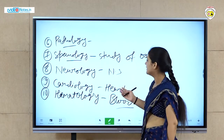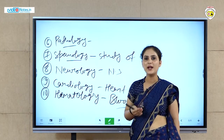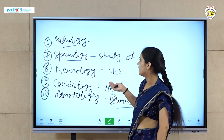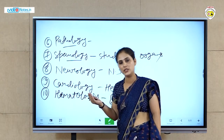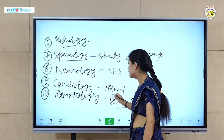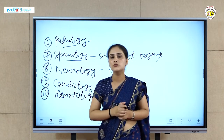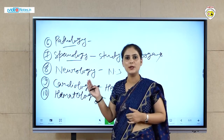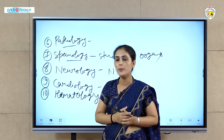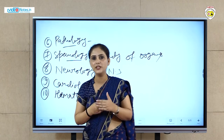So students, we have studied the introduction to anatomy and physiology and its scope. The scope includes various branches: histology, histopathology, cytology, myology, osteology, pathology, splanchnology, neurology, cardiology, and hematology. This was our first chapter — introduction to anatomy and physiology and its scope. In the next class, we will study various anatomical terminology, which is also part of chapter one. The second chapter covers the cell — the structure and function of cells. Thank you, students.